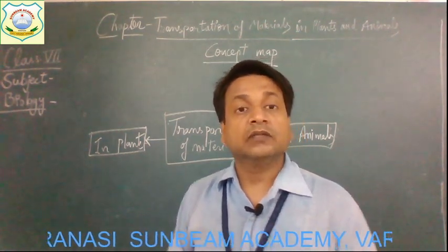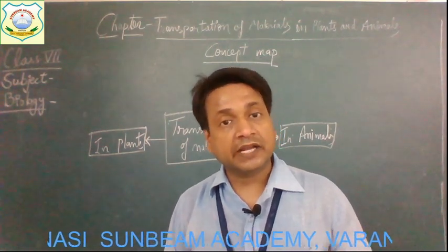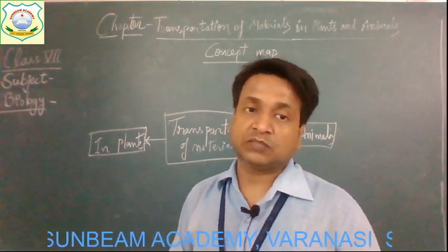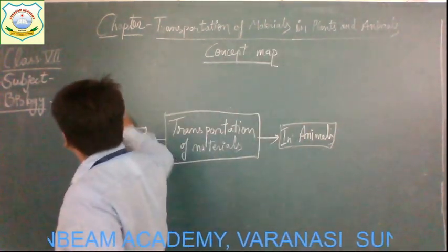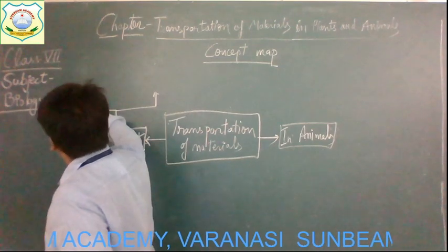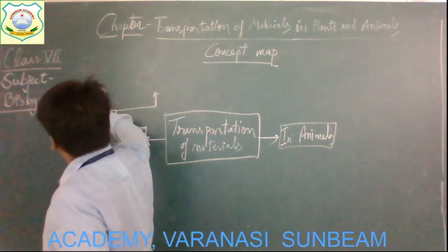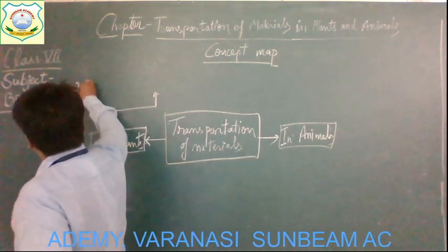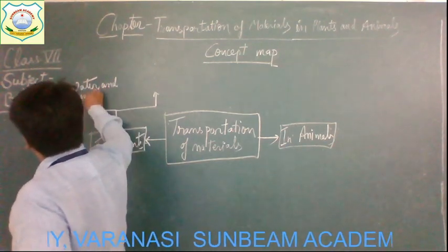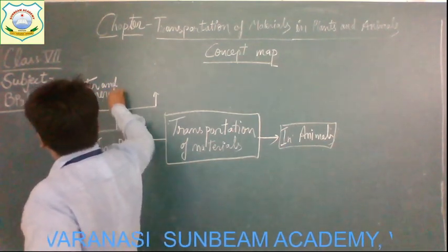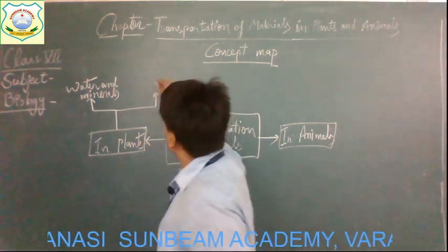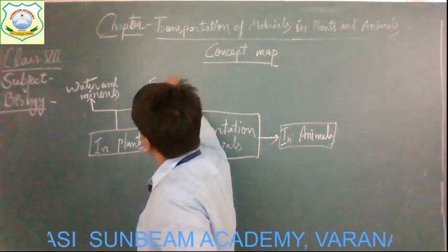There are mainly two ways of transportation of materials in plants. The first way is by which water and minerals are transported, and the second is by which food is transported. So we can categorize it in two categories: water and minerals, and food.